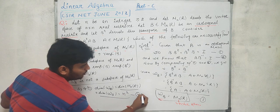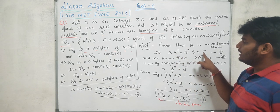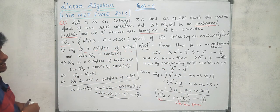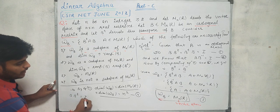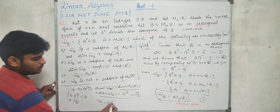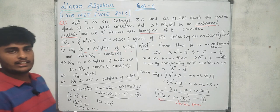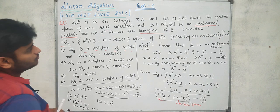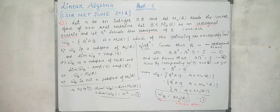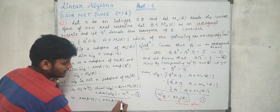Since B·B^T = I, taking determinants gives det(B)·det(B^T) = 1, so det(B)² = 1, meaning det(B) = ±1, which is non-zero. Therefore B is a full-rank matrix, and rank(B) = rank(B^T) = N.